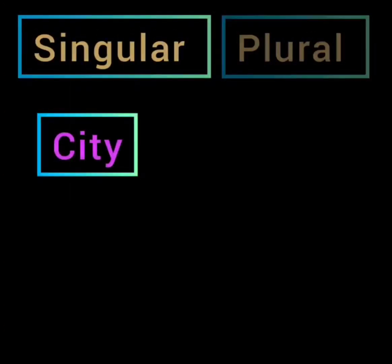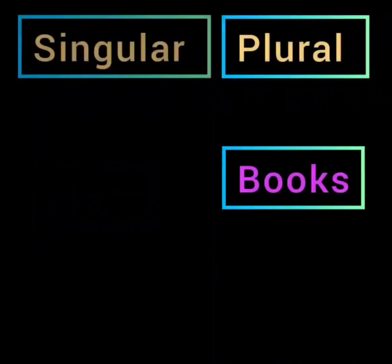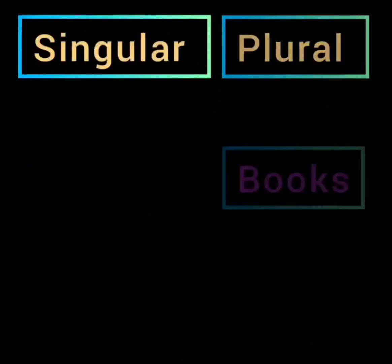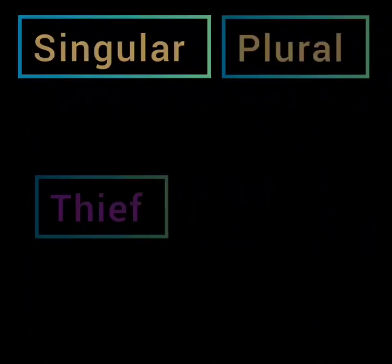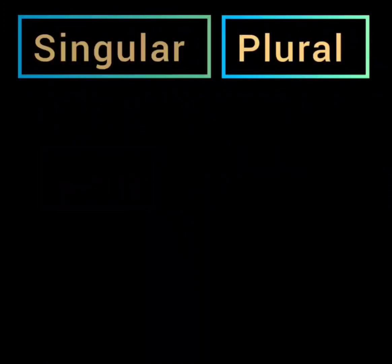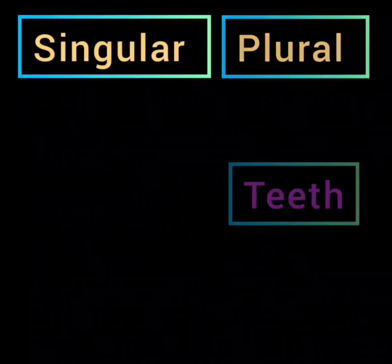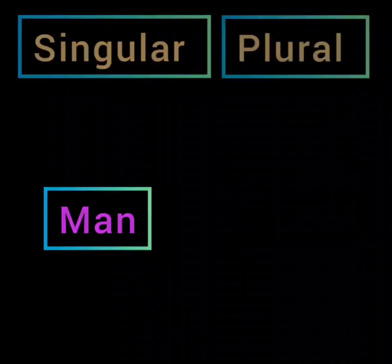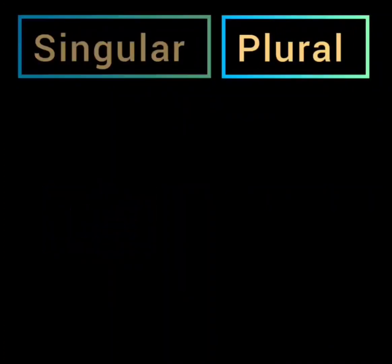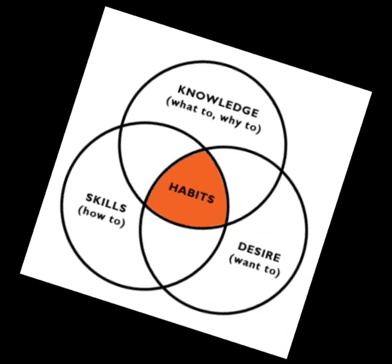For example: city becomes cities (adding -ies); book becomes books (adding -s); thief becomes thieves; army becomes armies; tooth becomes teeth; and man (M-A-N) becomes men (M-E-N). You have to practice such questions so that you understand how to change singular nouns into plurals.